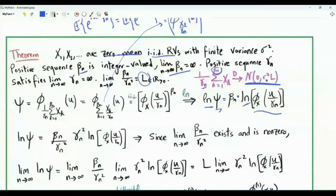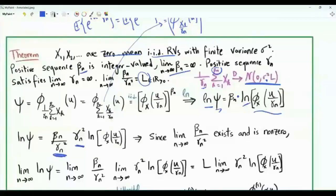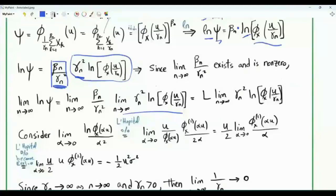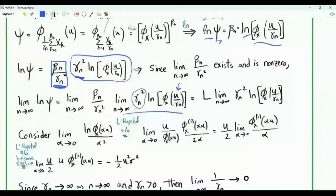It is given that the limit as n tends to infinity of beta n over gamma n squared exists and equals the positive real number L. Motivated by this, we rewrite with beta n divided by gamma n squared times gamma n squared. The limit of the first factor is L by assumption. We now investigate the limit of gamma n squared times the natural logarithm of the characteristic function evaluated at u over gamma n. Since gamma n tends to infinity, we study the limit of ln(phi(alpha u)) divided by alpha squared as alpha goes to zero. Alpha plays the role of 1 over gamma n. As alpha tends to zero, the denominator goes to zero, the characteristic function tends to 1, and its logarithm tends to zero. This is a zero over zero situation, so we apply L'Hôpital's rule.